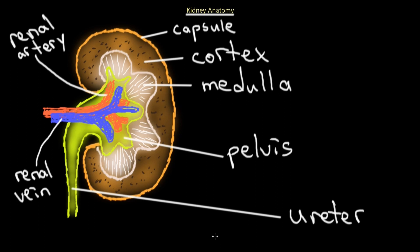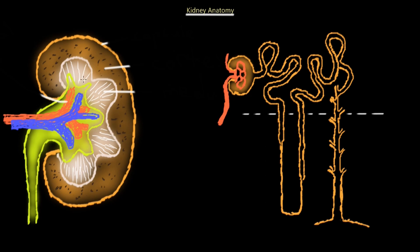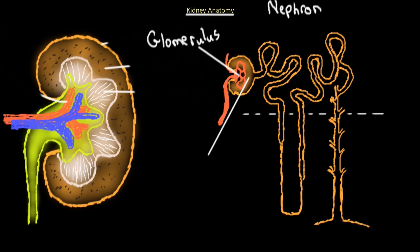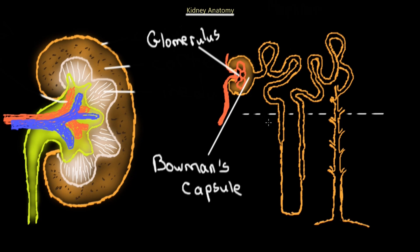From the bladder, urine is excreted through the urethra. If we zoom in further on the kidney, we find structures called nephrons. The nephron is composed of several parts. First, we have the glomerulus — that is the pooling of blood within the nephron from the renal artery. The structure surrounding the glomerulus is called Bowman's capsule. Going down the tube, the first part is called the proximal convoluted tubule, followed by the loop of Henle.